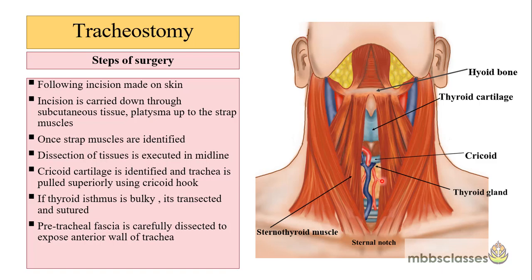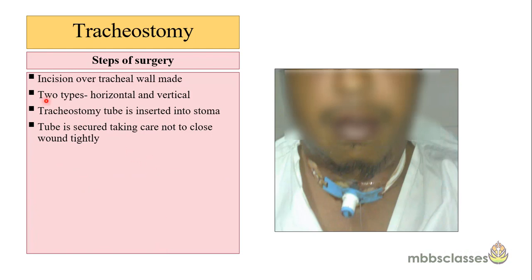Once the cricoid cartilage is identified, the trachea is pulled superiorly using a cricoid hook. The thyroid isthmus, if not bulky, can be retracted upward with retractors; if bulky, it is transected and sutured to prevent post-operative hemorrhage. The tracheal fascia is carefully dissected to expose the anterior wall of the trachea, and a horizontal or vertical incision is made on the tracheal wall. The tracheostomy tube is then inserted into the stoma; a surge of air or secretions confirms placement, after which the tube flanges are sutured to the skin.